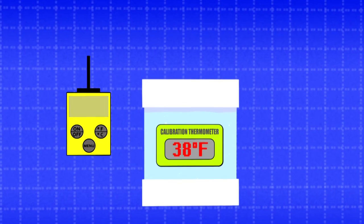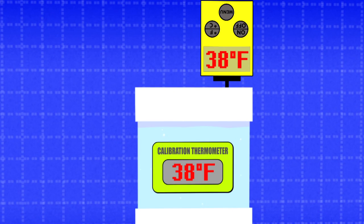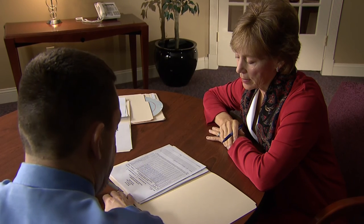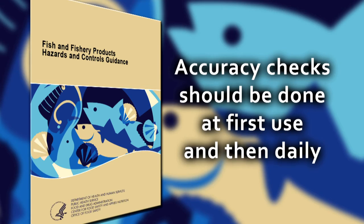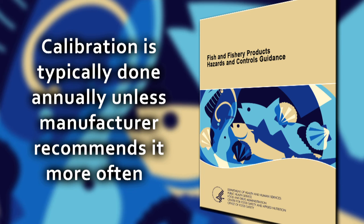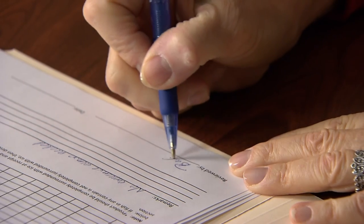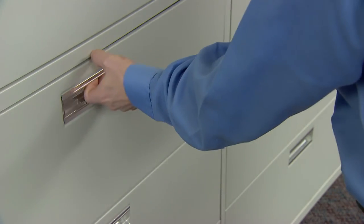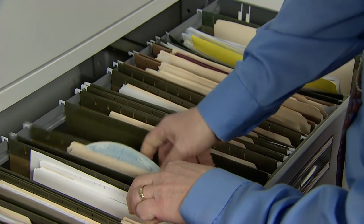Verification procedures ensure that your HACCP plan is adequate to address the hazards and is consistently being followed. Verification activities include calibration and accuracy checks of monitoring equipment, and review of monitoring, corrective action, and verification records. Monitoring equipment such as temperature measuring devices should be checked for accuracy before first use, and then at least daily after that. Calibration should be done at least annually or more frequently if recommended by the device manufacturer. All monitoring records should be reviewed within one week of preparation, and keep all HACCP records on file for at least one year for refrigerated products, and at least two years for frozen, preserved, or shelf-stable products.